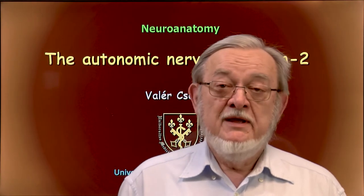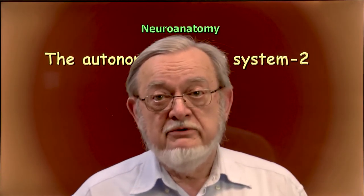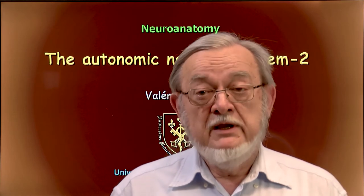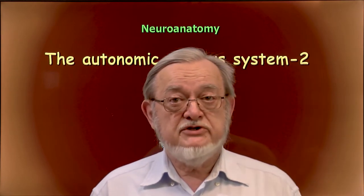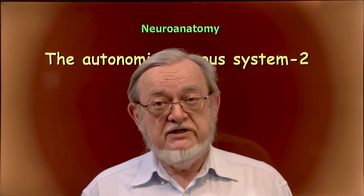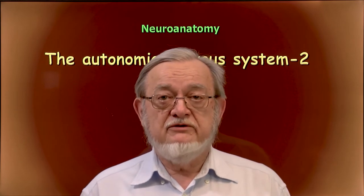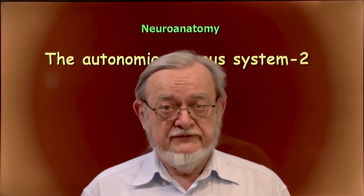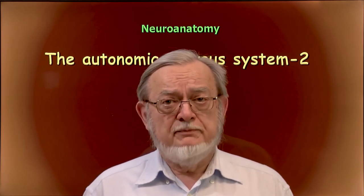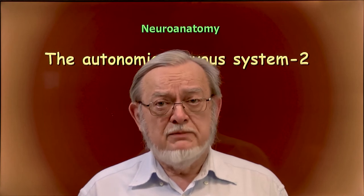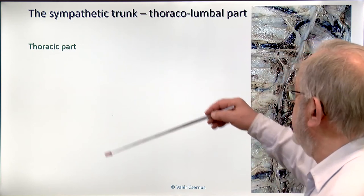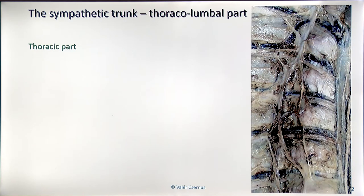Dear students, with this lecture I continue the general overview on the autonomic nervous system. As you remember, in the previous lecture I gave a general description on the structure of the autonomic nervous system and started describing the sympathetic part of it. The last topic I talked about was the cervical part of the sympathetic trunk. Now I will continue the description of the sympathetic trunk, starting with the thoracic part.